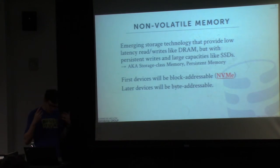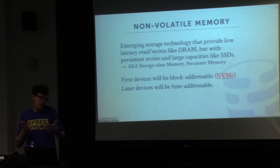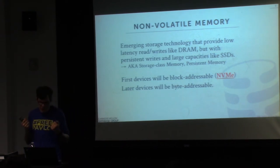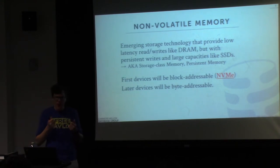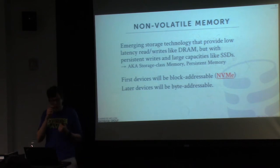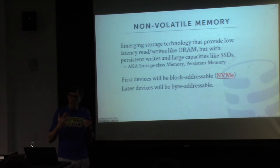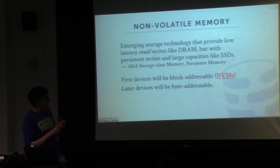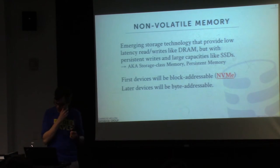The term 'non-volatile memory' can mean different things to different people. Technically NAND flash is a type of non-volatile memory, but when I say NVM here, I really mean a storage device or technology that has the same speed — or almost the same speed — as DRAM for reads and writes, but is completely persistent and durable like an SSD. In the literature you'll see it called storage class memory, persistent memory, or NVRAM. For our purposes, NVM is this special device that's like DRAM but completely durable.